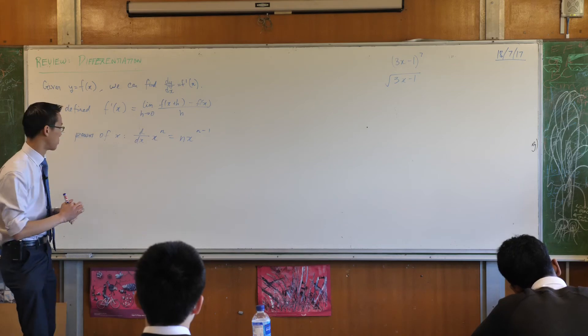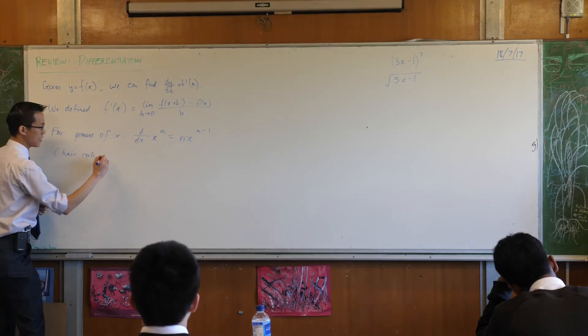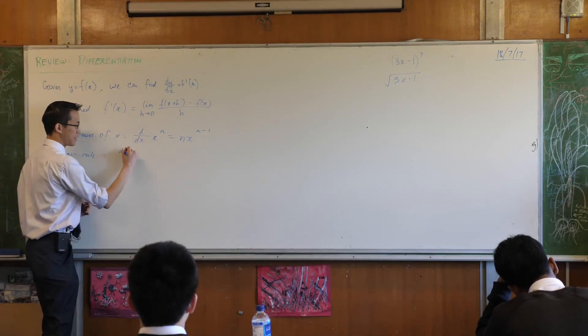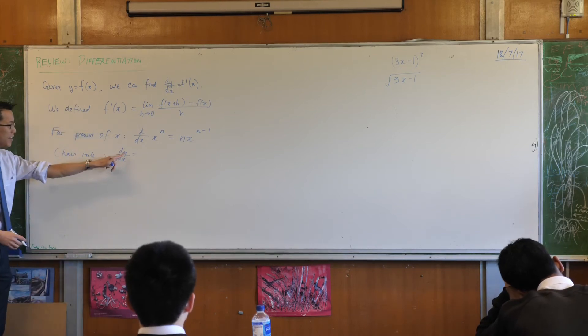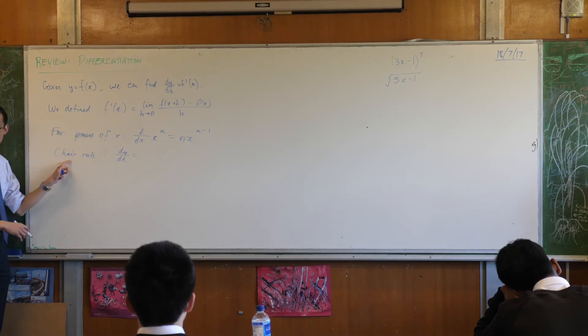Chain rule. So the statement of chain rule is very simple. It's if you've got some function y, then you can find the derivative with respect to x by chaining together a pair of other derivatives. What were they? Do you remember?